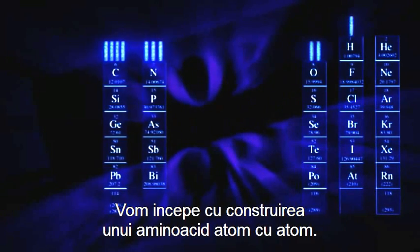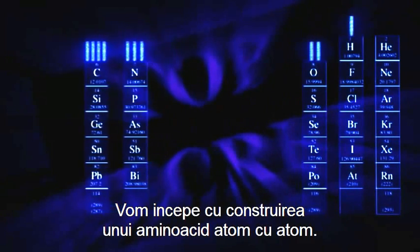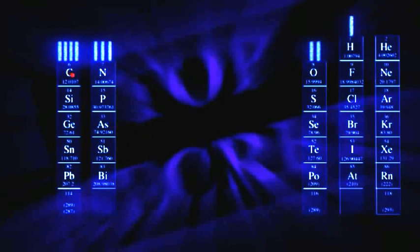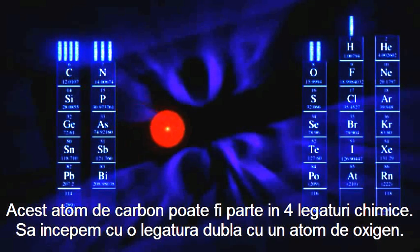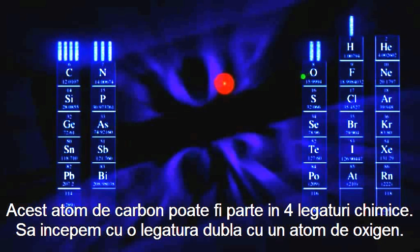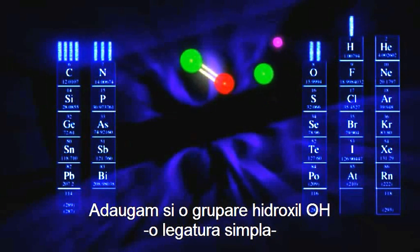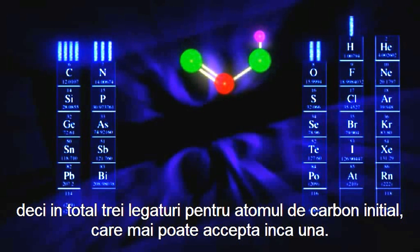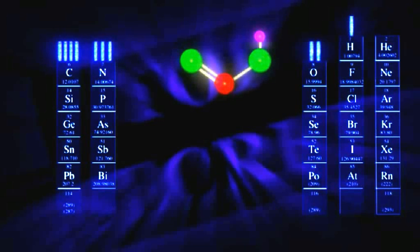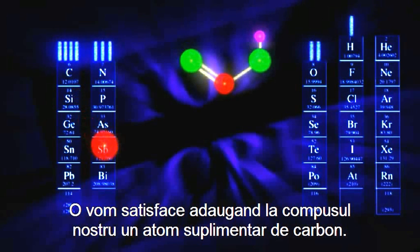So let's start by building an amino acid atom by atom. This carbon atom wants to make four bonds. So let's give it a double bond with oxygen, and let's give a single bond to an OH molecule. That's a total of three bonds for the carbon — it still wants another, so let's give it another carbon for its fourth bond.